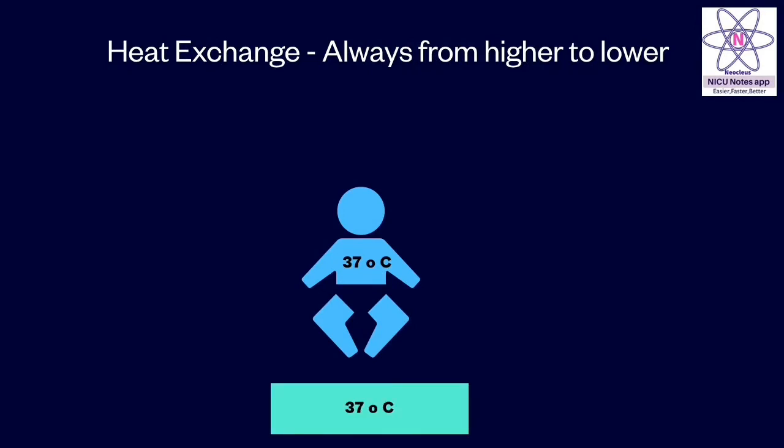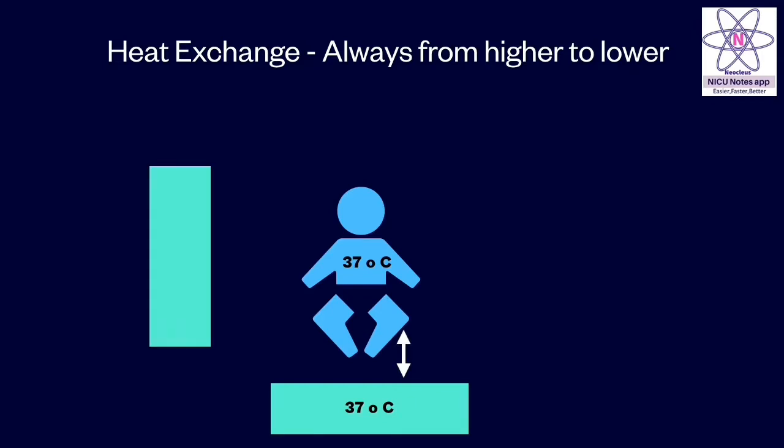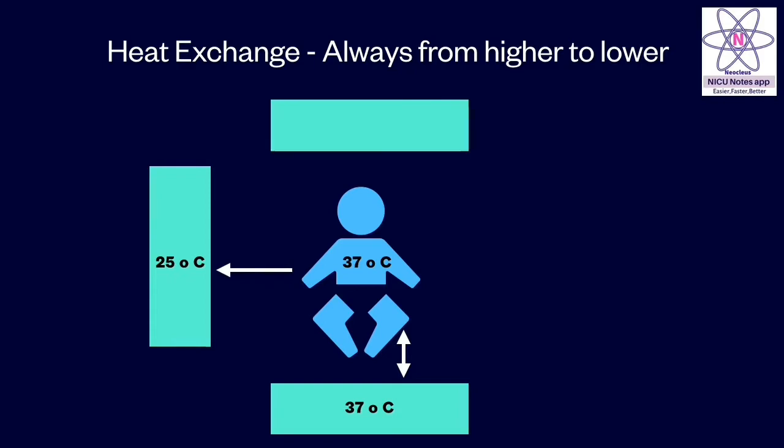Heat exchanges from higher to lower. If the baby's temperature is 37 degrees and the surface nearby is 37, there is no loss of heat. However, if the nearby surface is 25 degrees, as the baby's temperature is higher, the heat loss happens from the baby to the nearby surface.